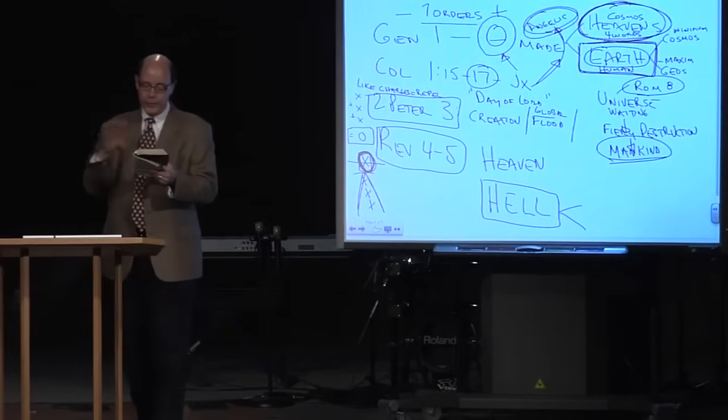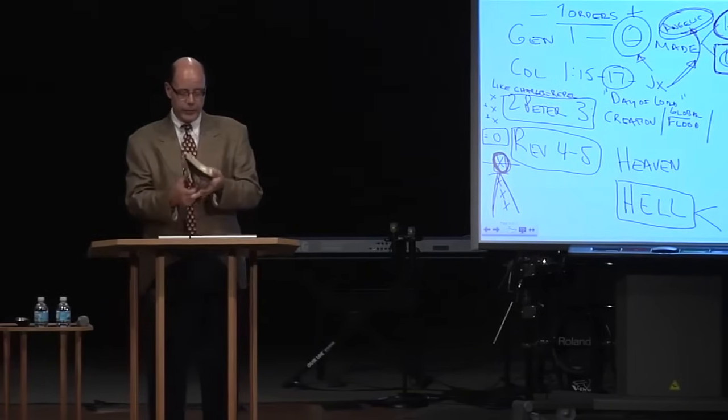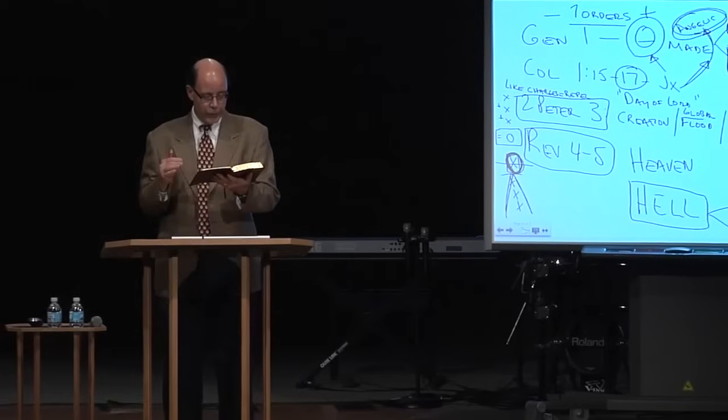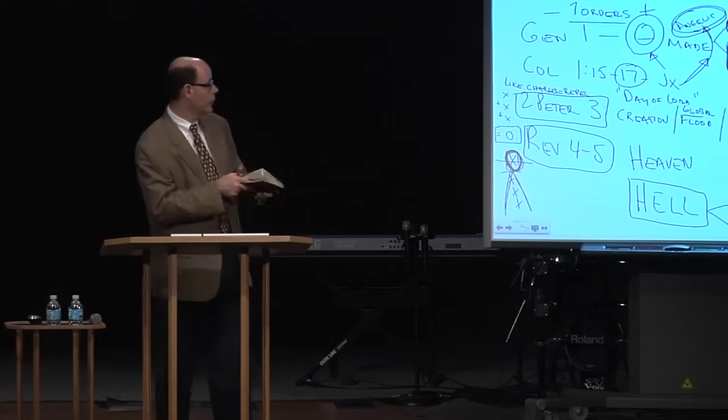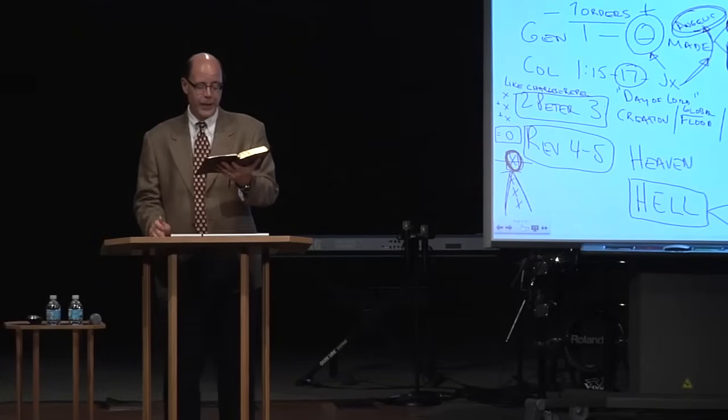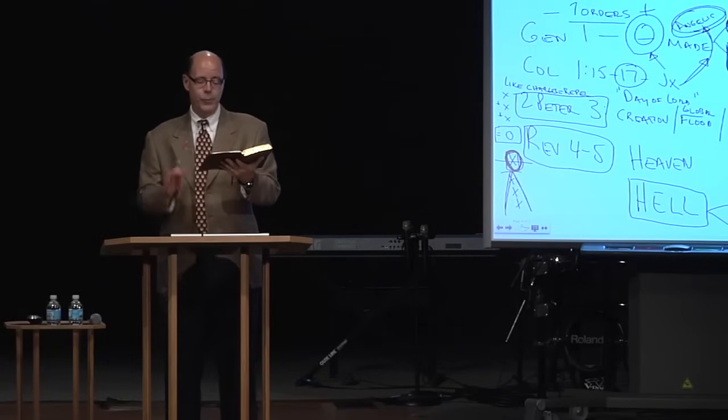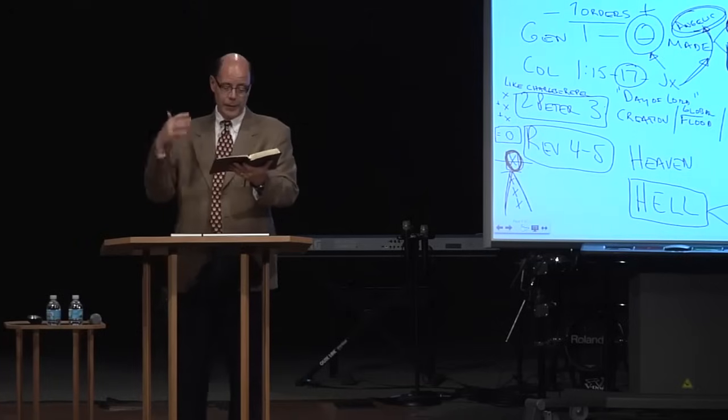When we get to heaven, in chapter 4, you've all seen this, the thrones and all the voices. Look at verse 10. There are 24 elders who fall down, and they say, you, verse 11, are worthy to receive. You created all things. So we get the creation piece in heaven. Then you get to chapter 5, and when you look at chapter 5, look at verse 8.